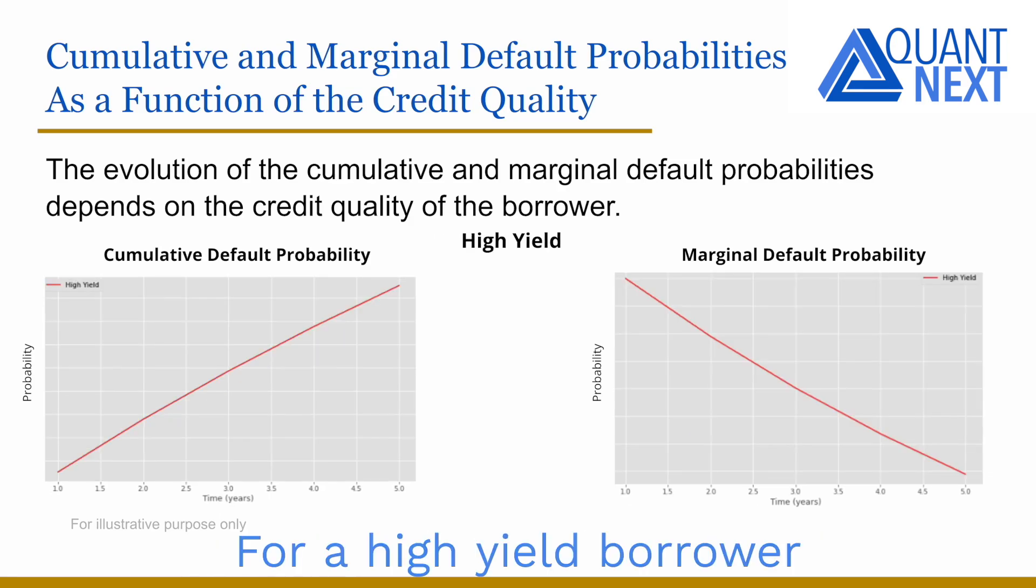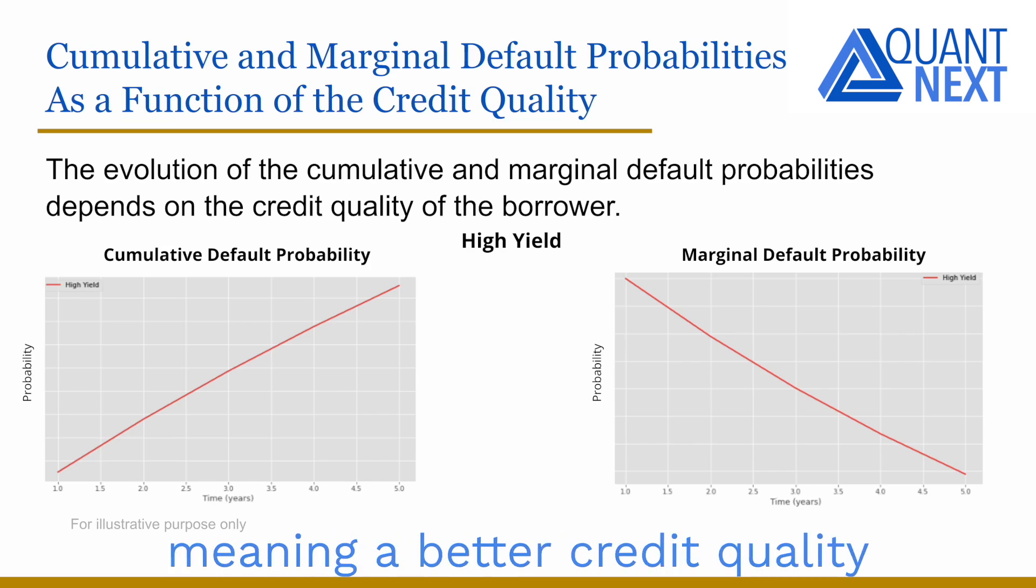For a high-yield borrower with a bad credit quality, it is the opposite. Its default probability is high on the short term, but if it survives, it is likely that it upgrades, meaning a better credit quality over time and a decrease of the marginal default probability.